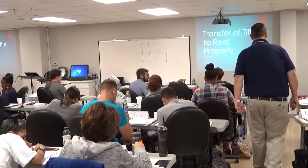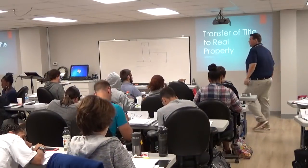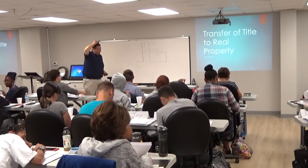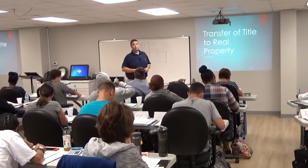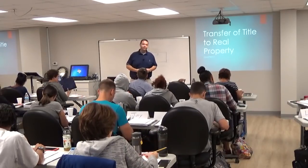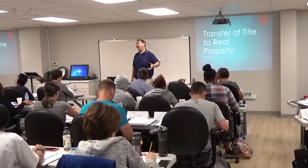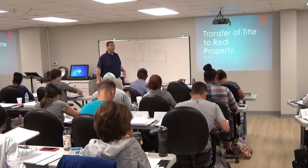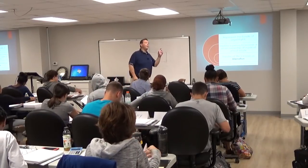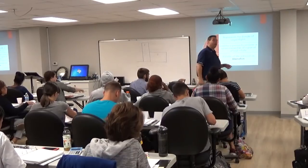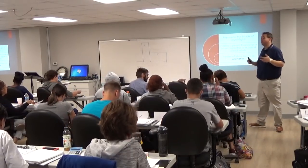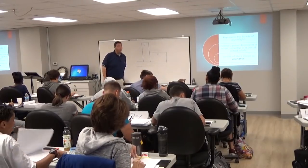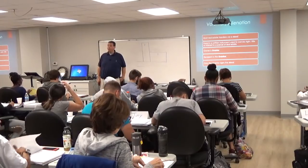Let's turn to Chapter 5 in your notes and slides. Chapter 5 deals with transferring title, which means changing ownership. Anytime we change ownership, that's called a transfer of title. The most common way we transfer title is selling the property. We're going to talk about alienation - alienation and transfer of title are really the same thing. Alienation means separation; you're separating yourself from ownership of the property, either voluntarily or involuntarily.